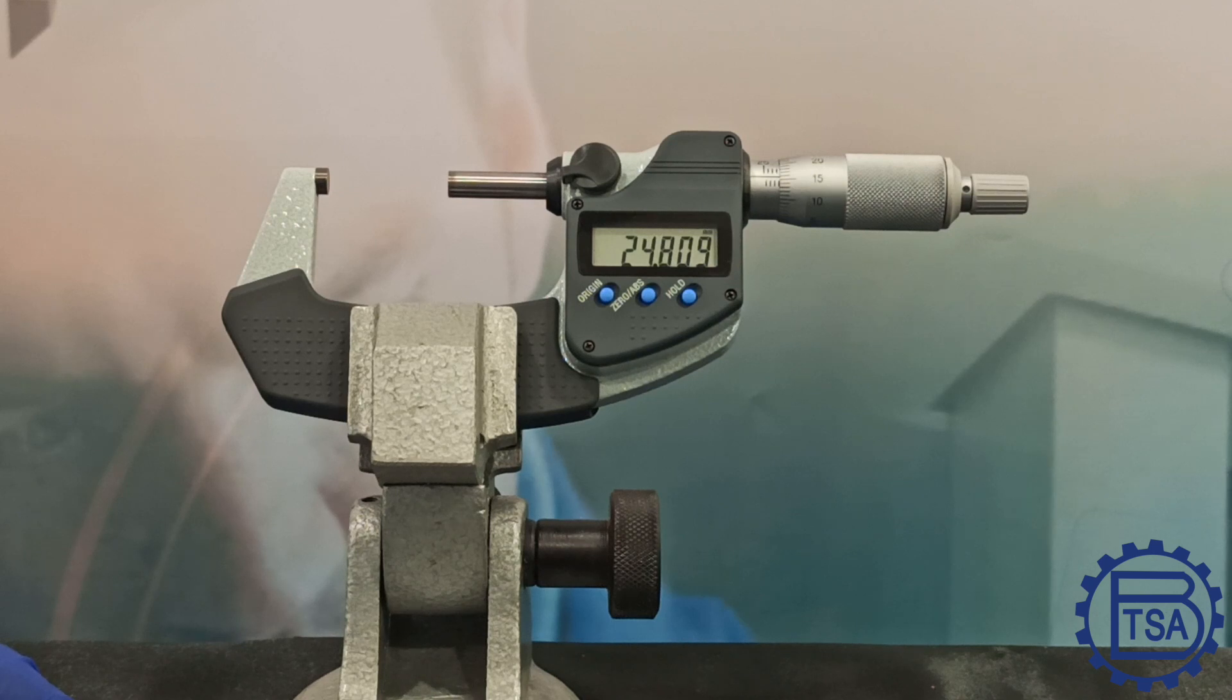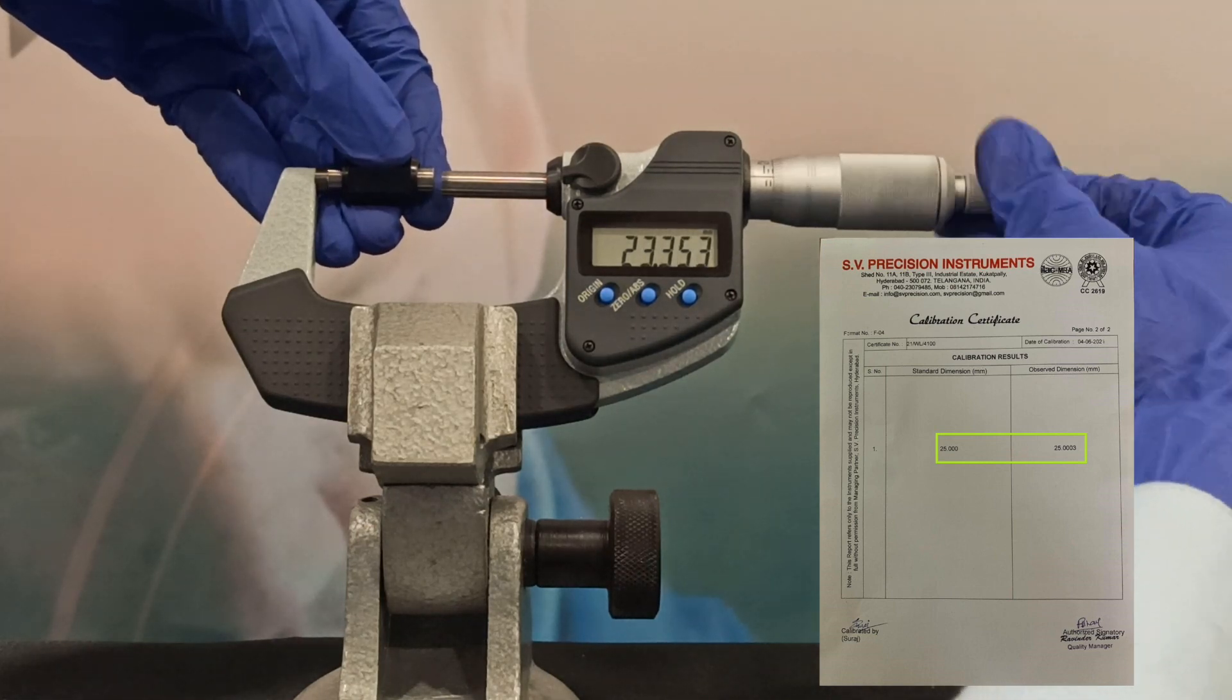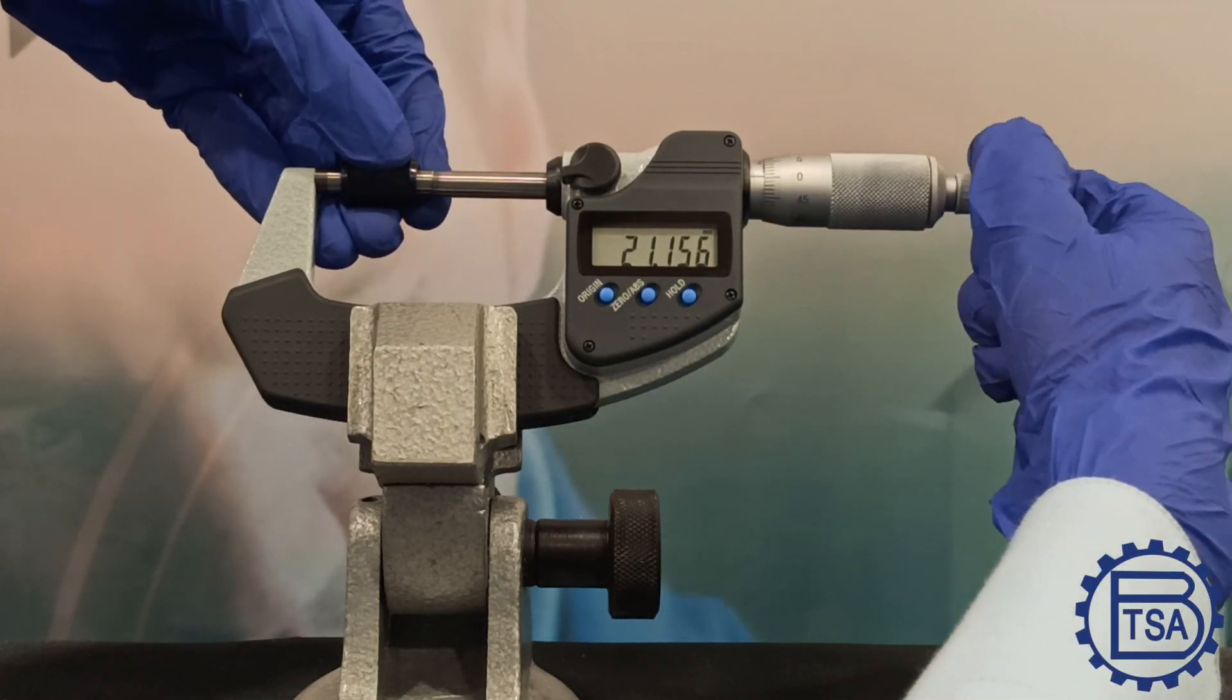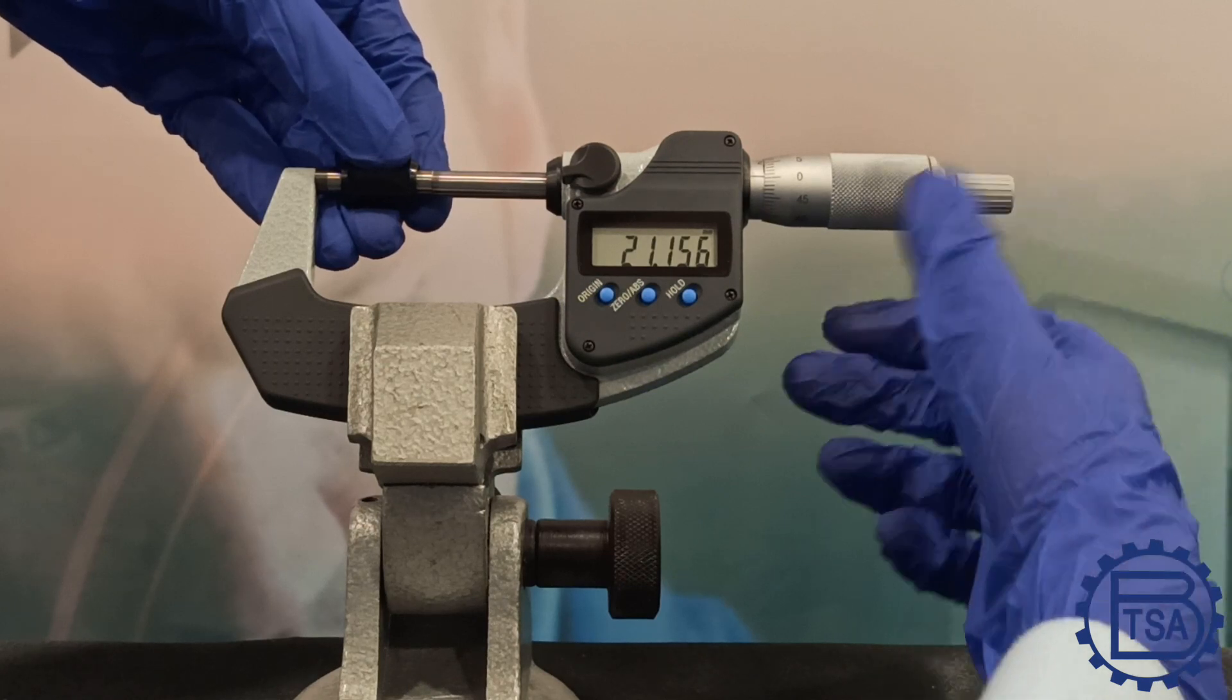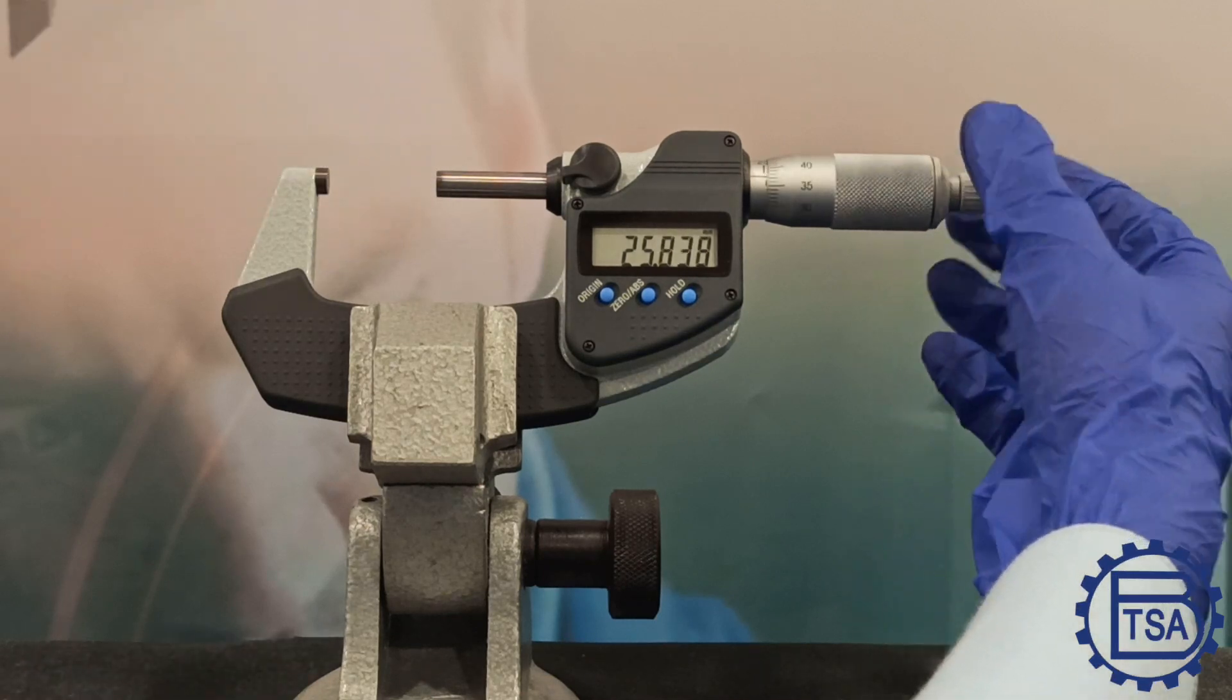Let's preset the value on the micrometer. This is a 25 mm setting rod. Press origin button to preset. Now let's measure the component.